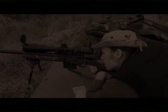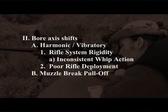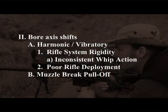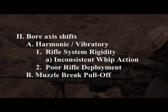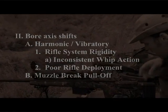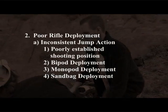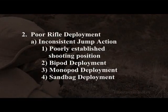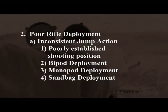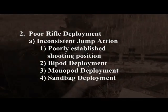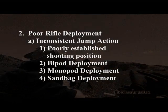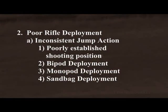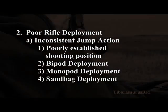Another thing that can alter bore axis shifts is poor rifle deployment, which can result in inconsistent jump action under recoil. We'll discuss how poorly established shooting positions and improper bipod deployment can throw off how your weapon system behaves under recoil. We're going to talk about butt monopods and various rifle deployment issues, as well as sandbags and different ways of deploying your weapon system to minimize the effects of inconsistent jump action.